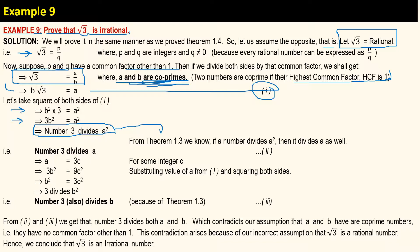Using Theorem 1.3, which states that if a number divides a square then it also divides the number itself, we get that 3 divides a. This implies that a can be written as a multiple of 3, so let's write a is equal to 3 multiplied by c. Now we substitute this value of a back into equation 1.